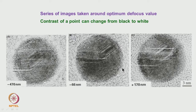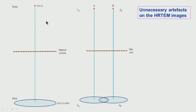For a microscope with a given Cs value, changing the defocus changes the image contrast visibly. For a point object, the optical system causes a spread in the image. When two closely-spaced points are present, their disk-shaped spread functions overlap in the image plane, causing interference and contrast variations that are artifacts rather than true representations of the atomic positions.